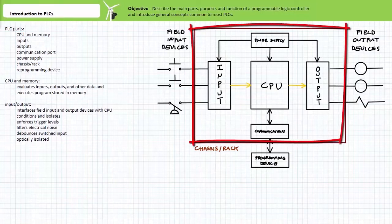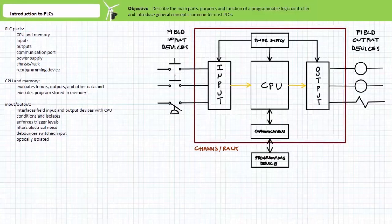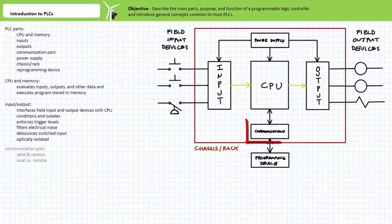The chassis is the housing of the PLC, which could either be modular or fixed. The power supply is the DC or AC input necessary for operation. The communication ports allow the PLC to send and receive data, as well as allow other devices to monitor and control the process.